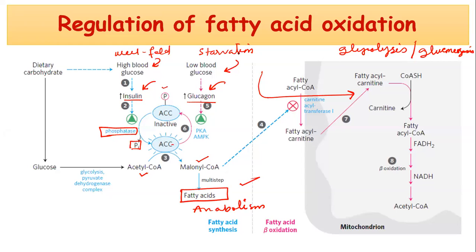In the starvation condition, blood glucose levels are low, so the pancreas releases glucagon instead of insulin. Glucagon activates multiple kinases, including AMP-activated protein kinase, which phosphorylate Acetyl-CoA carboxylase, rendering it inactive. This means fatty acid anabolism is blocked. Without Malonyl-CoA, Carnitine Acyl Transferase 1 is no longer inhibited, so fatty acyl-CoA can enter the mitochondrial matrix and undergo beta-oxidation.